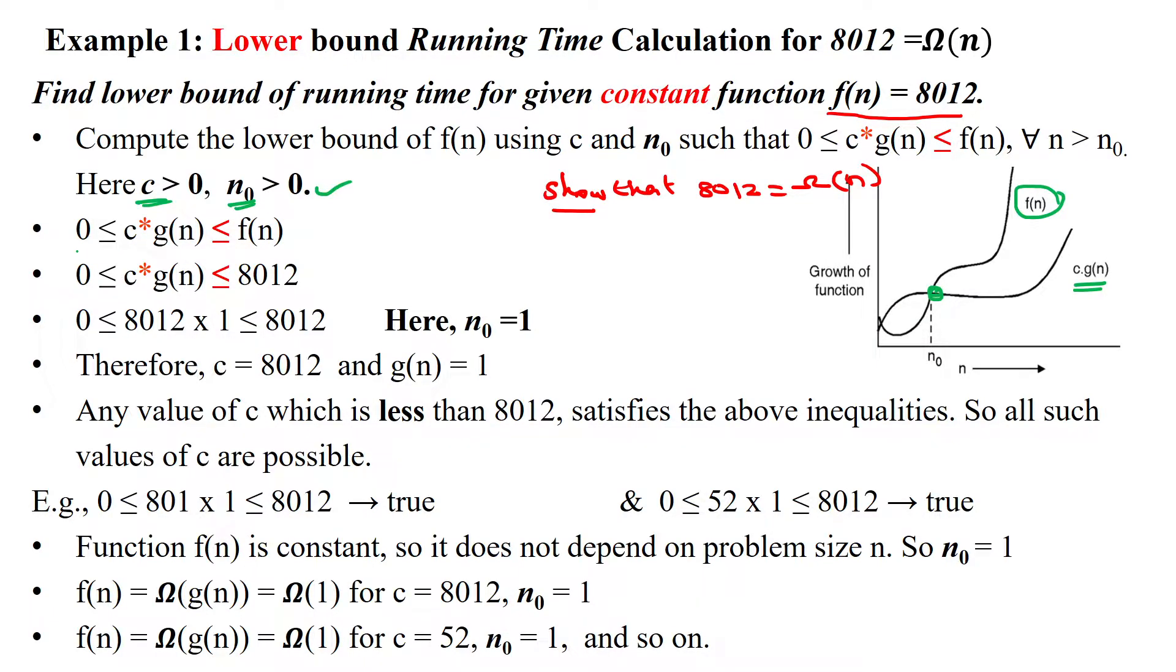So the given condition is 0 less than or equal to c times g(n). So c times g(n) is always less than or equal to given f(n). So given f(n) is 8012, then c times g(n) is always less than or equal to 8012, given constant function 8012.